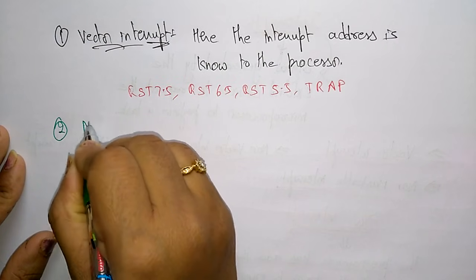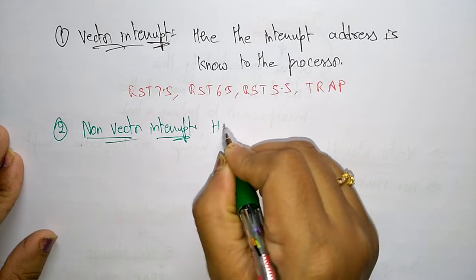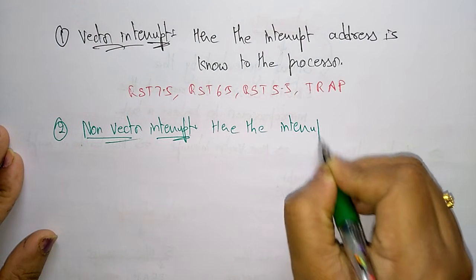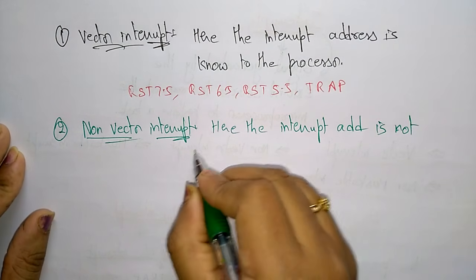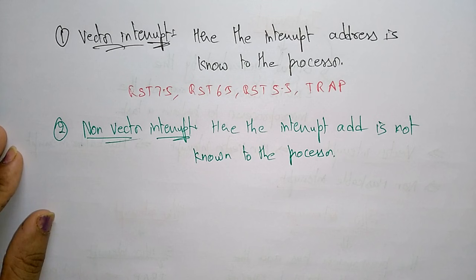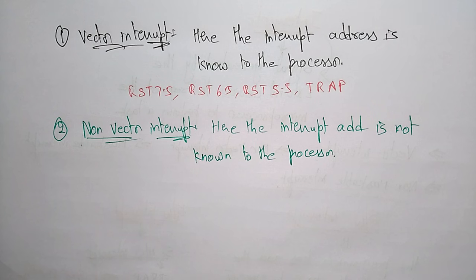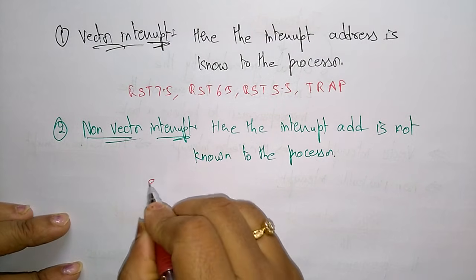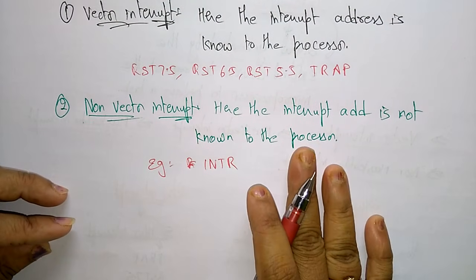In a non-vector interrupt, the interrupt address is not known to the processor. The interrupt address needs to be sent externally by the device. Only with the help of the external device does the processor know the address of the interrupt and from where it is coming. The example of a non-vector interrupt is INTR.